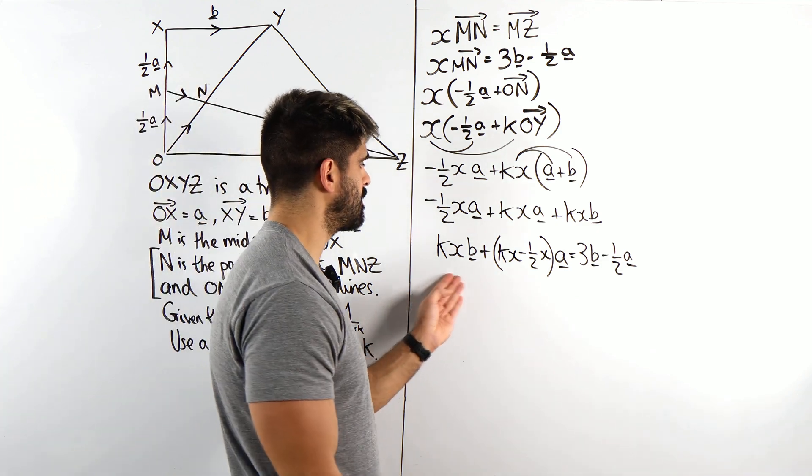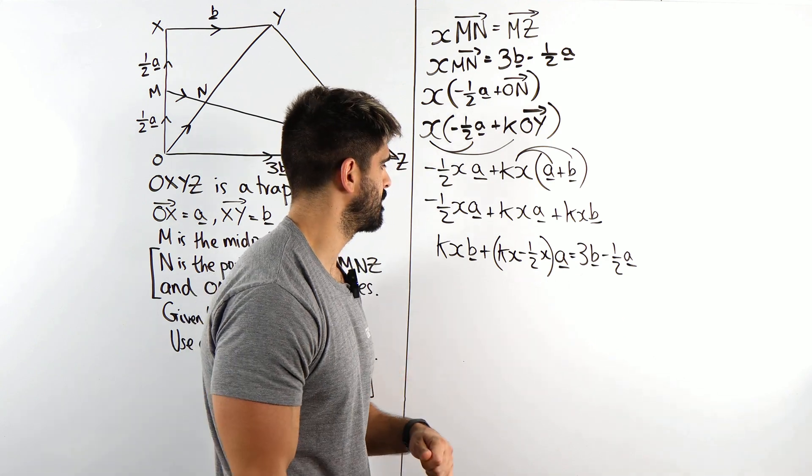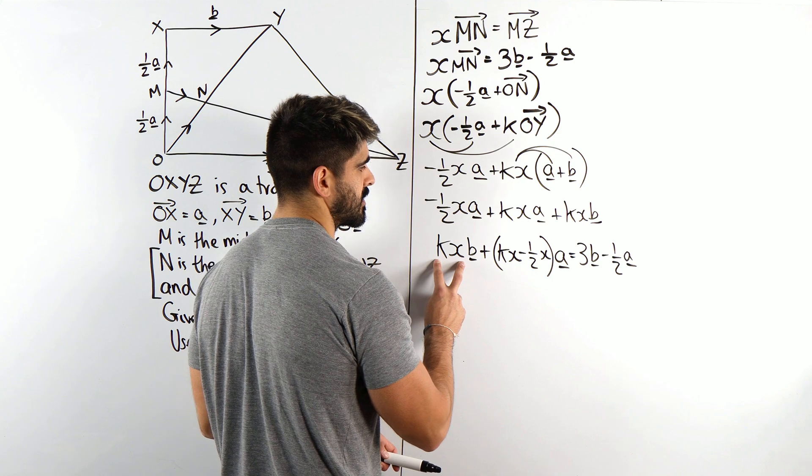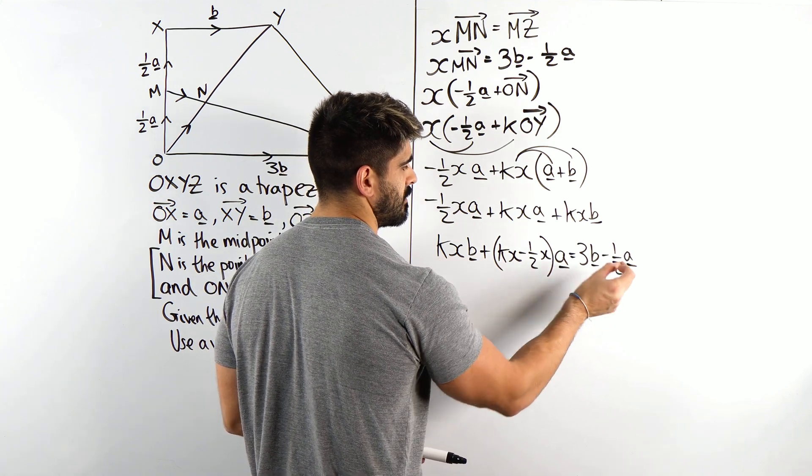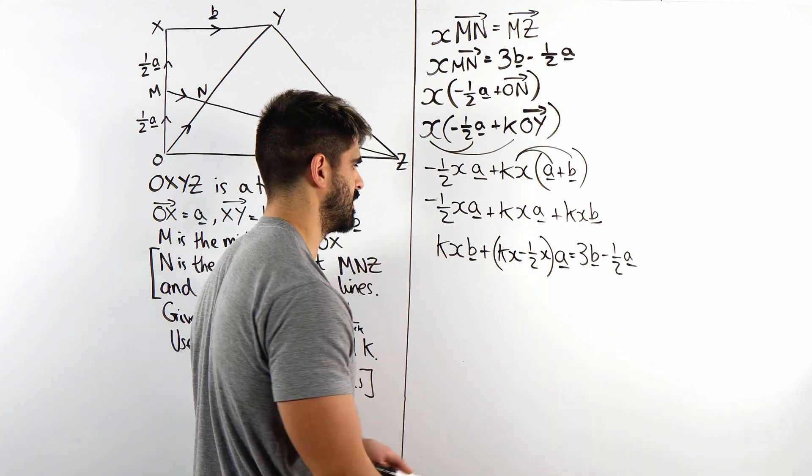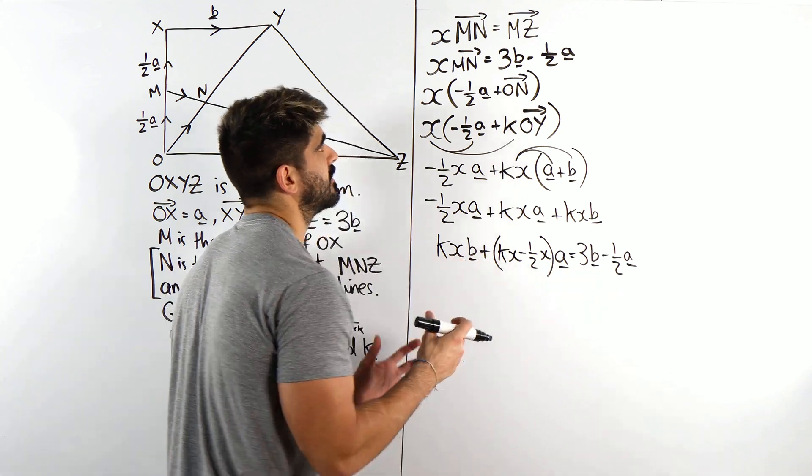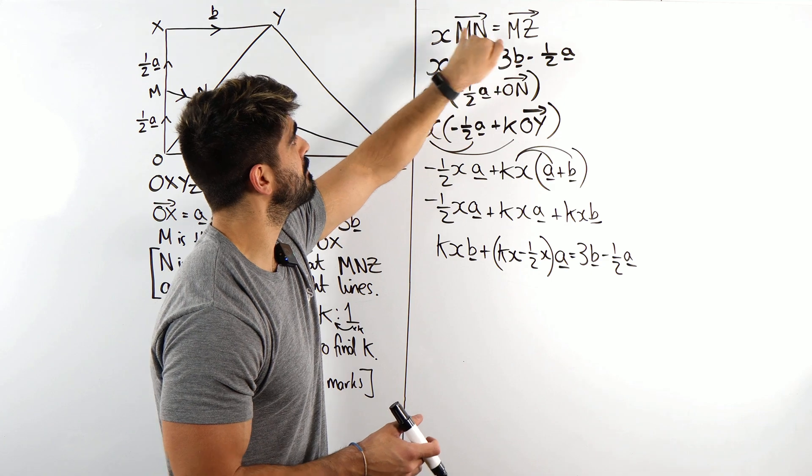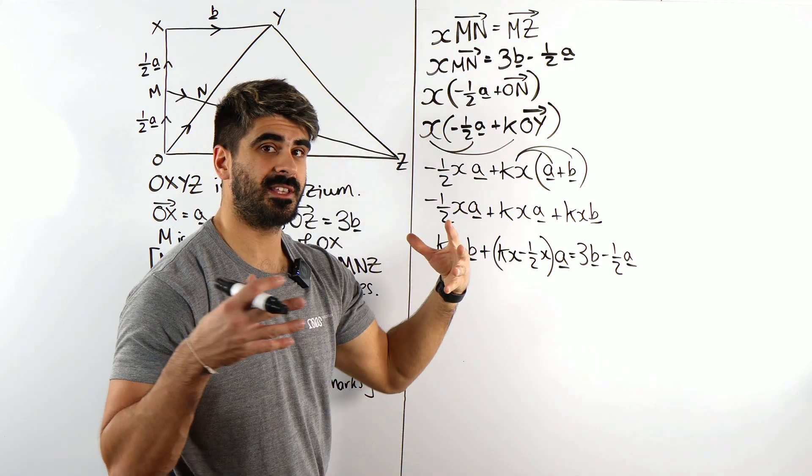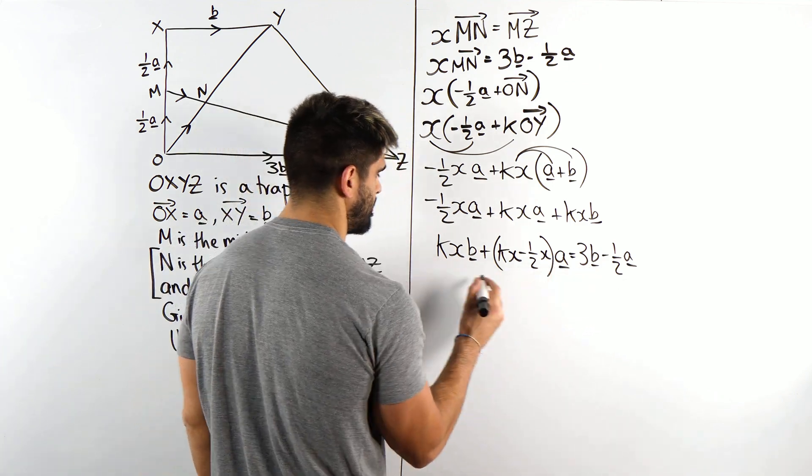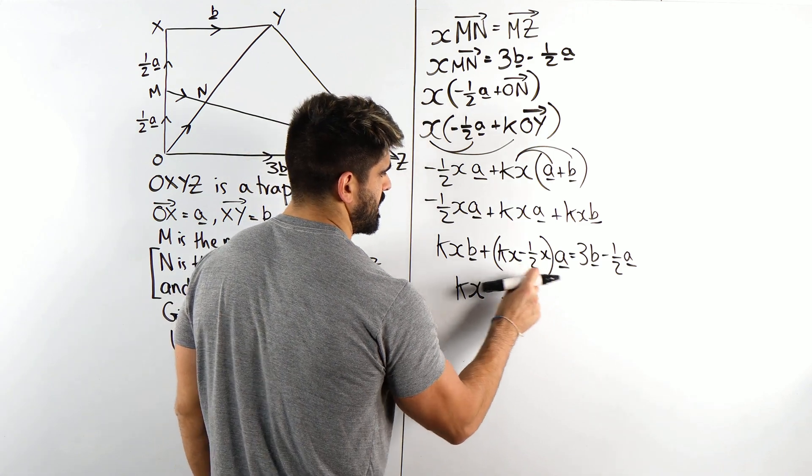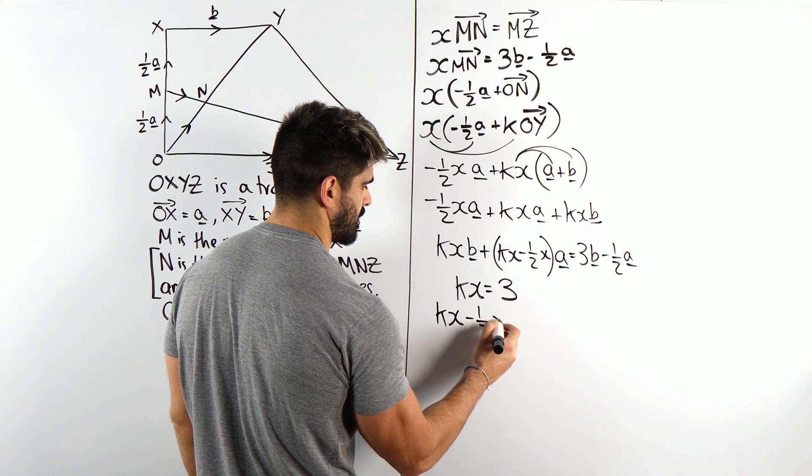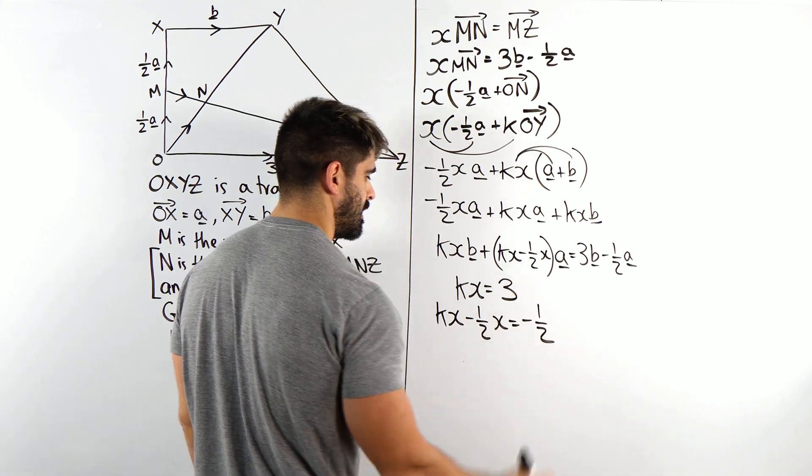Now if they're the exact same, we somehow need to figure out what K and X need to be in order for these to be the same. Well, you might think about this simultaneously. You might say, so K X must equal 3 and this must equal minus a half. And you can do that. That's completely fine. So K X is 3 because we said that M N is a multiple of M Z. But with this X, we can now say that they're exactly the same. So we can say K X is 3. And this horrible looking thing, K X minus a half X is minus a half.